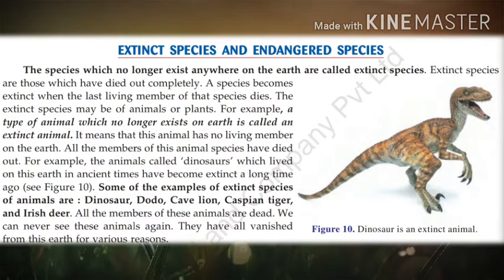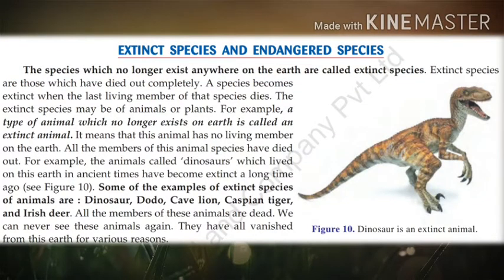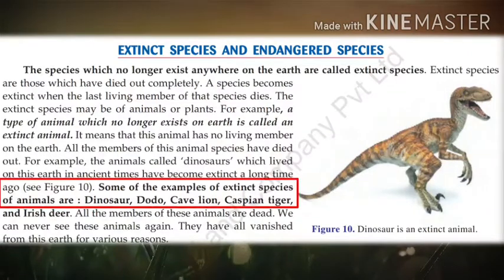What are extinct species? Look into the book page 119. The species which no longer exist anywhere on the earth are called extinct species. For example, dinosaur, dodo, cave lion, Caspian tiger, and Irish deer.